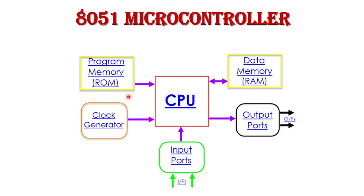So this is the basic difference: a microprocessor is basically only a CPU, and if we want to connect other peripherals, we connect them externally. But in the case of a microcontroller, all components — CPU, memory, input/output ports — everything needed to perform a specific task is embedded on a single chip.